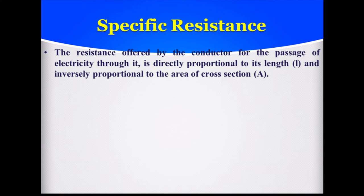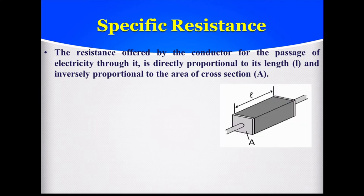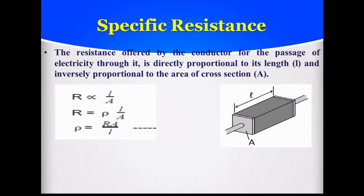Resistance is again divided into a number of types; we will focus on specific resistance. The resistance offered by a conductor for the passage of electricity through it is directly proportional to its length and inversely proportional to its area of cross-section. Consider a wire having some length L and cross-sectional area A.